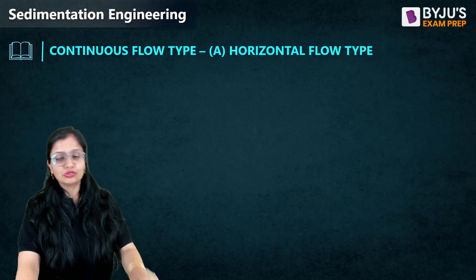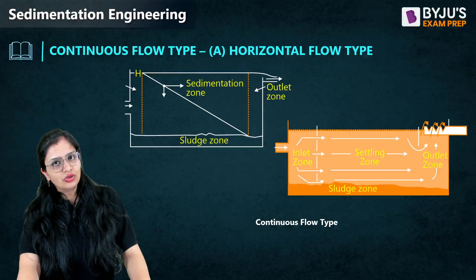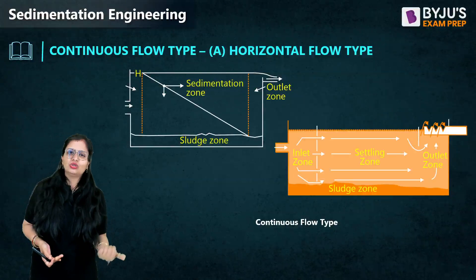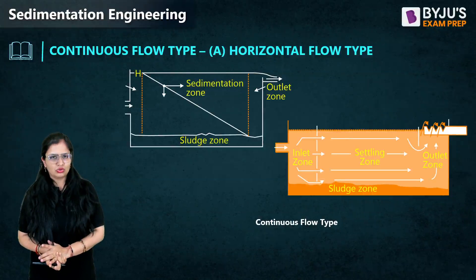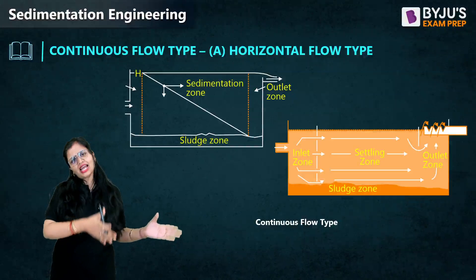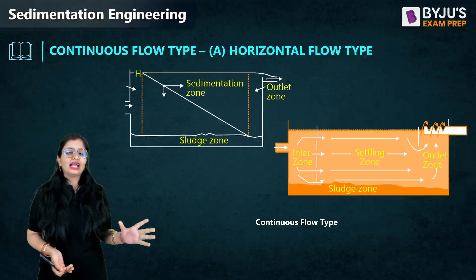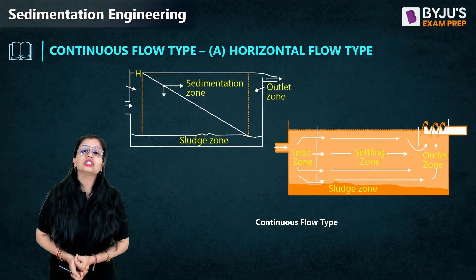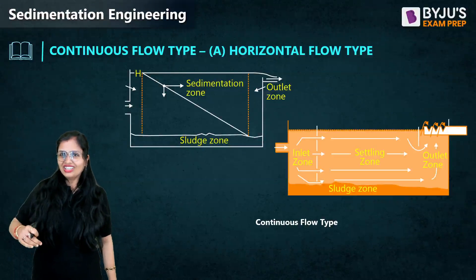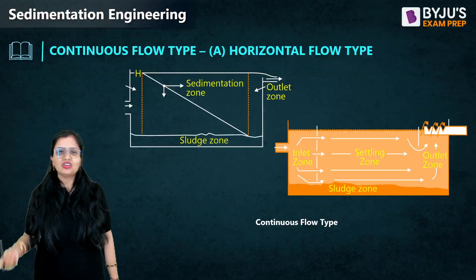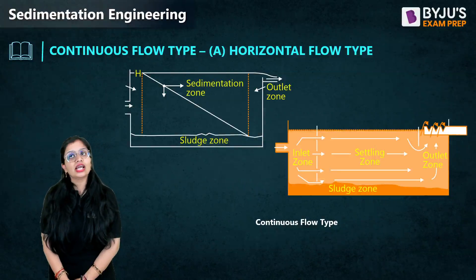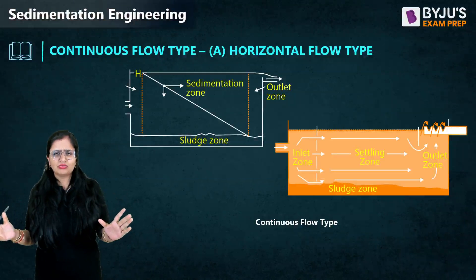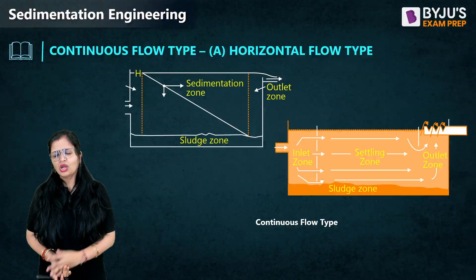Now, talking about the continuous flow type tank. Here you have a horizontal flow type tank, which, when seen from the top, appears rectangular in plan. It also has an inlet zone, settling zone, sludge zone, and outlet zone. The key difference from the fixed type tank is that in the continuous flow type, movement of water is taking place — turbulence is not zero. The water is not at rest; it is flowing.